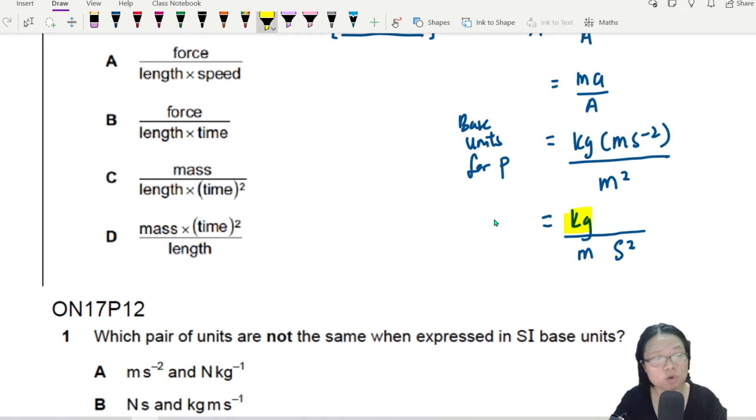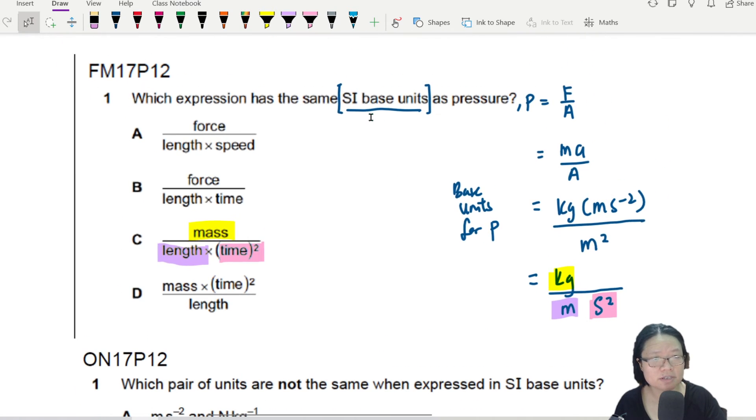So hopefully, you know, lowercase A is for acceleration, uppercase A is for area. So now I can convert to base units. This will be kg M s negative 2 over M square. So right now I can do some simplifying. So you'll get M negative 1. So in this case, the answer would be C.